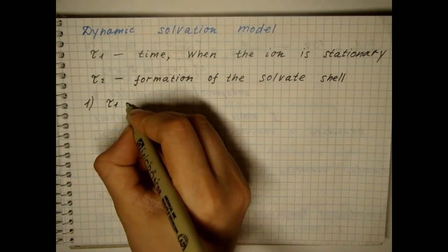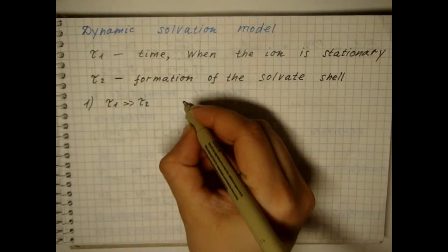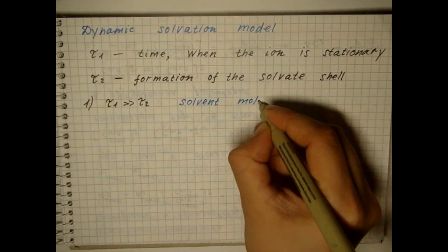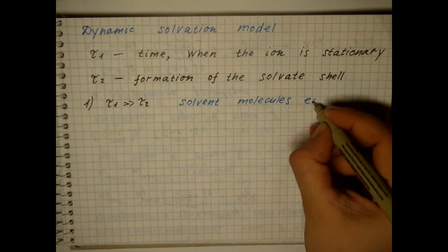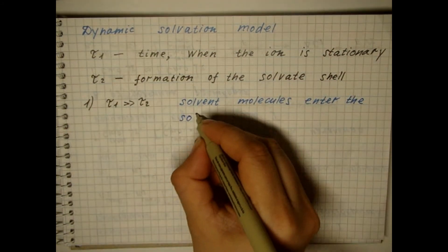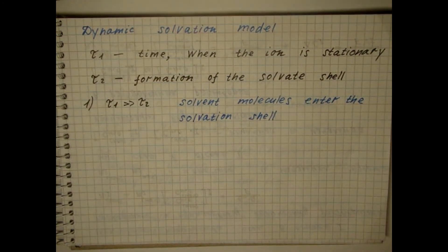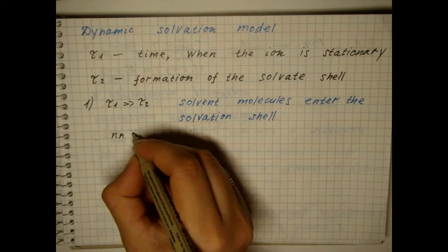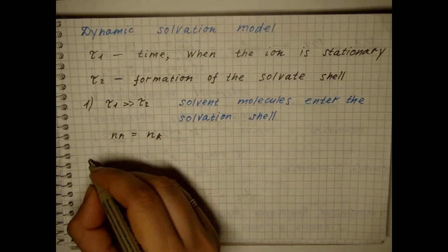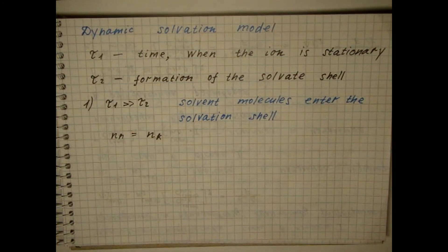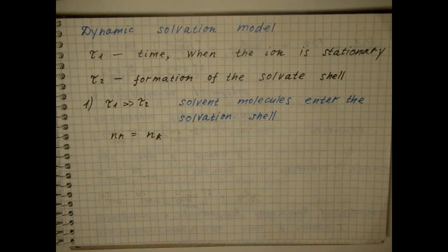If T1 is greater than T2, then the solvent molecules have time to break the hydrogen or dipole-dipole bonds with other solvent molecules and enter the solvation shell of the ion. Under these conditions, a solid solvation shell surrounds the ion, and this will be characteristic of small ions, for example, lithium, since the electric field is stronger the smaller its radius.